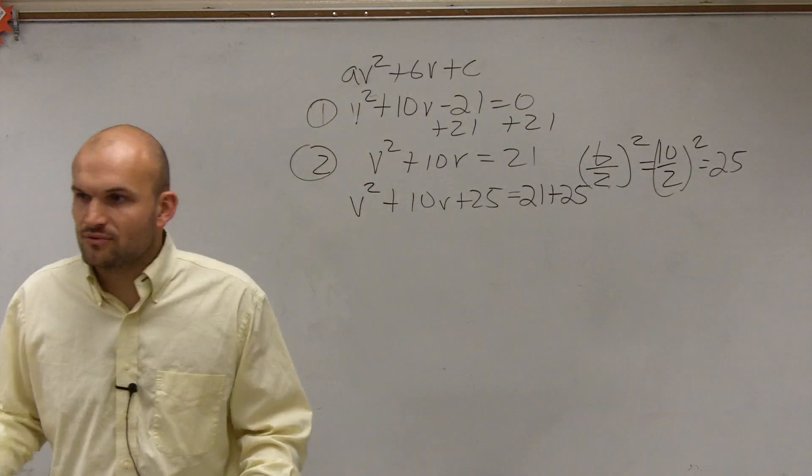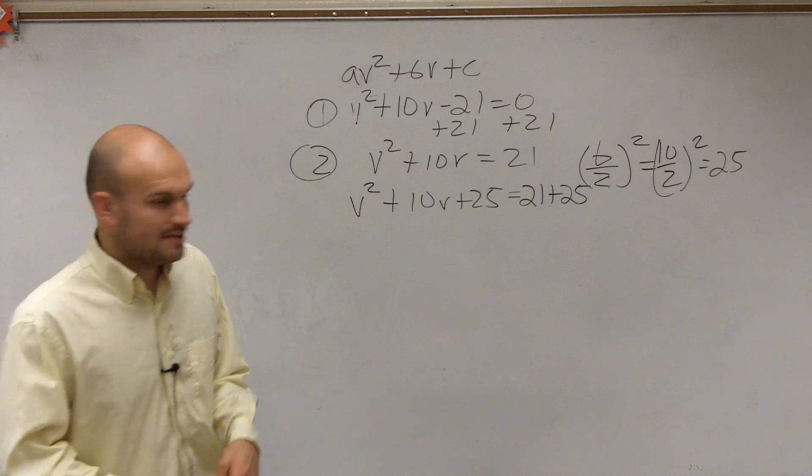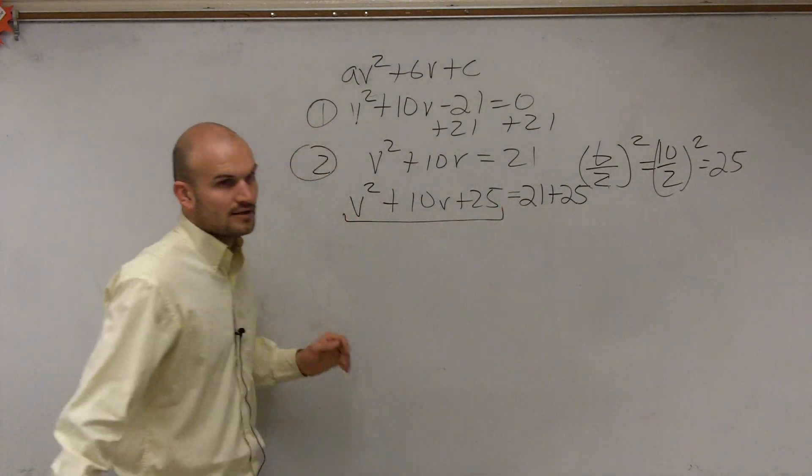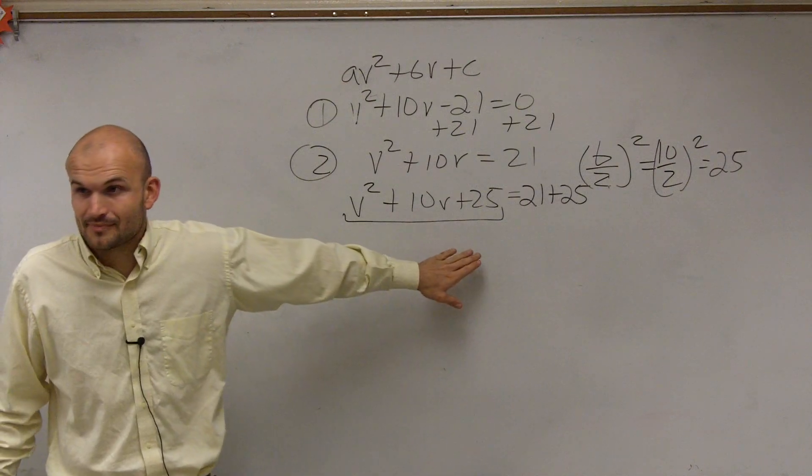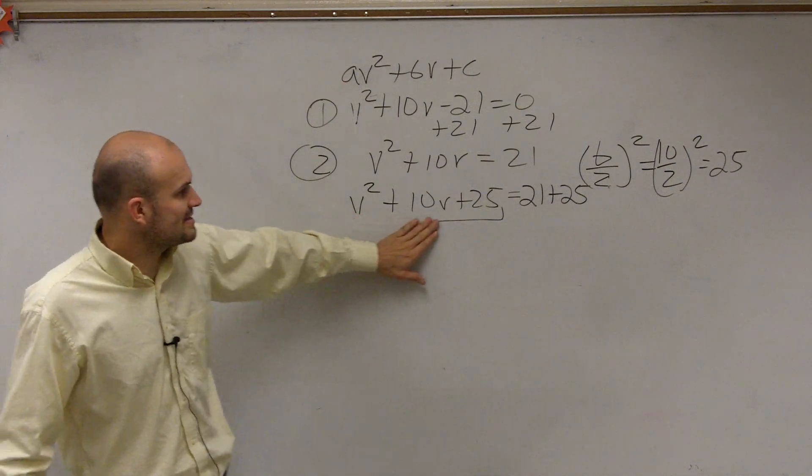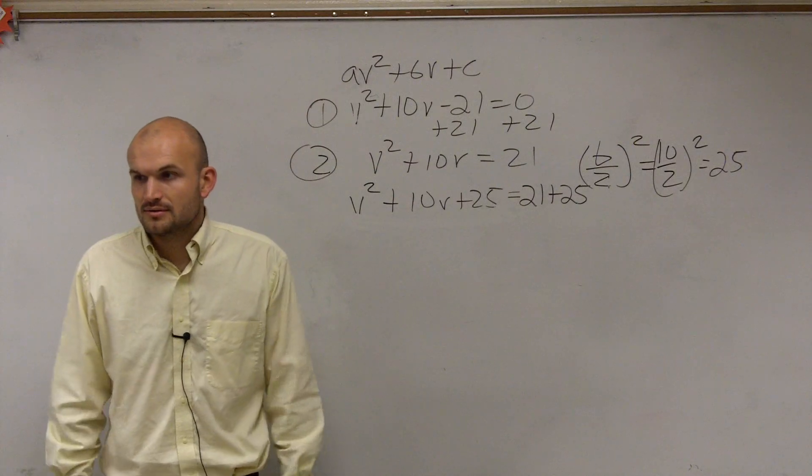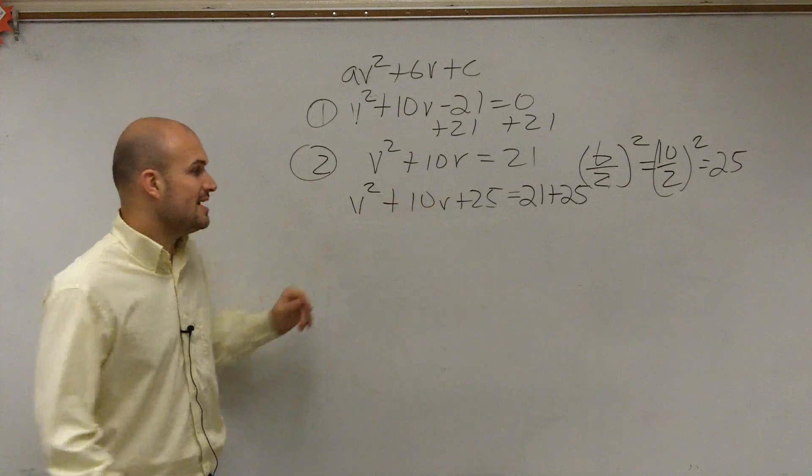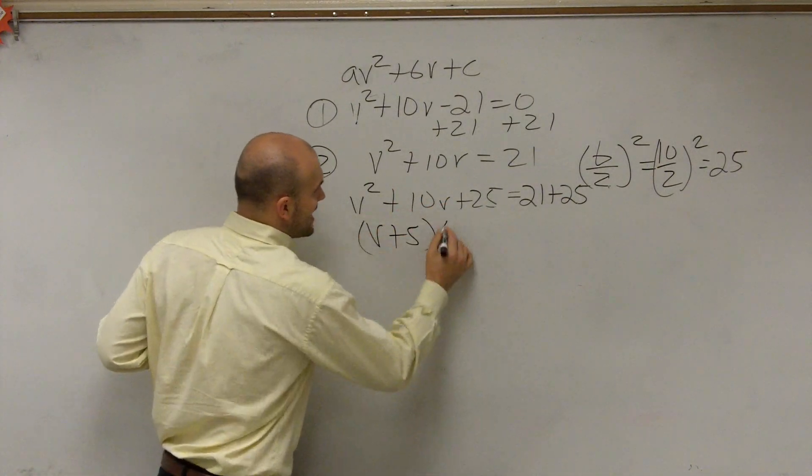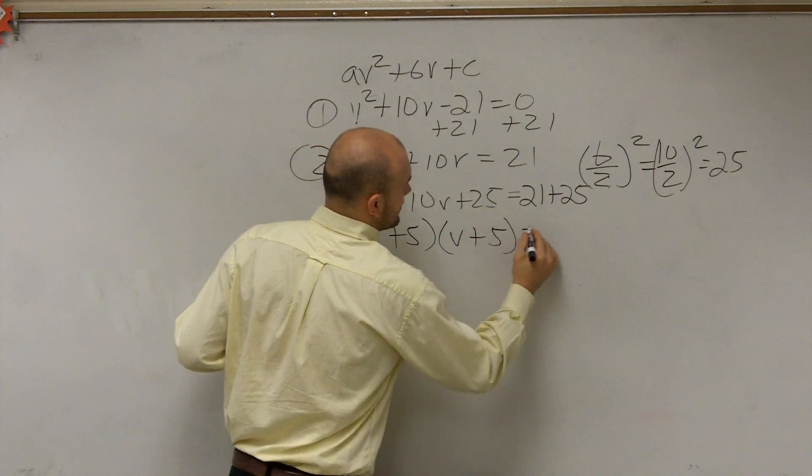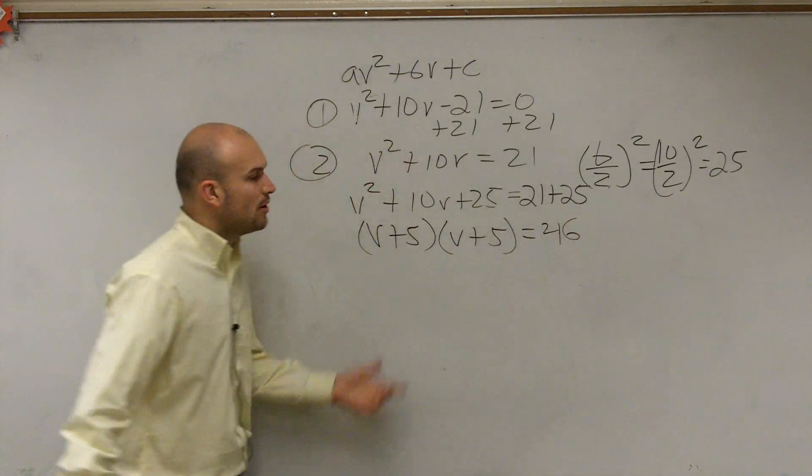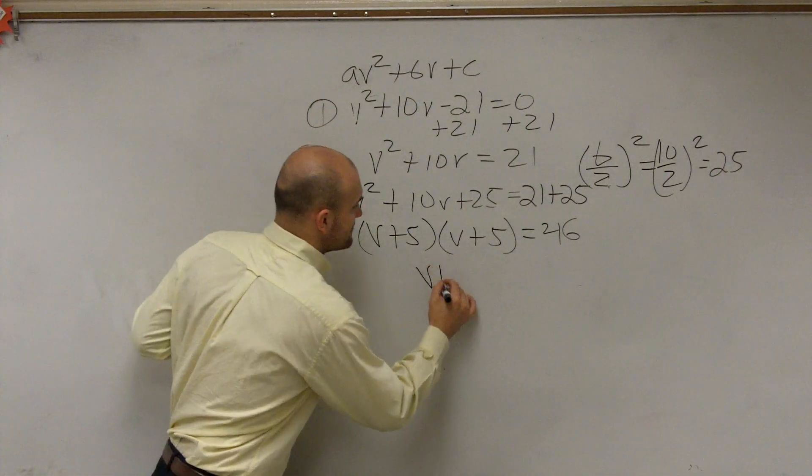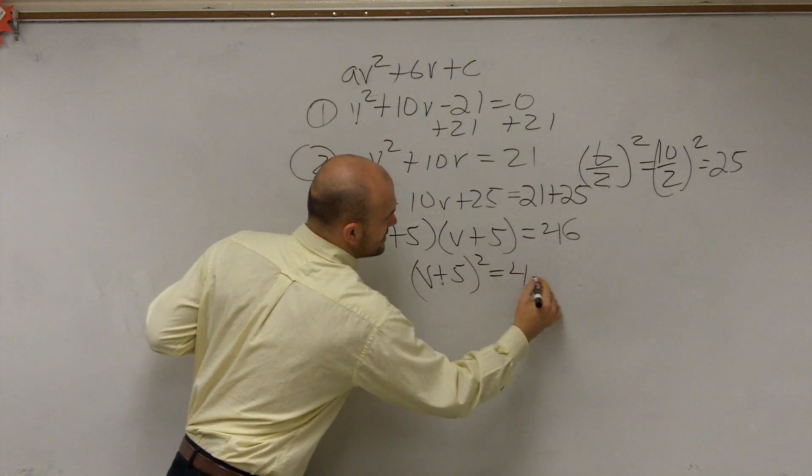But now, ladies and gentlemen, what we did, the reason why we did this is because we have now created a perfect square. You guys can factor this. Does anybody know what v² + 10v + 25 is going to be factored? What two numbers multiply to give you 25, add to give you 10? 5. Yeah. This is (v + 5)(v + 5) = 46. Well, how else can you rewrite this even further? Yeah, you can write this as (v + 5)² = 46.